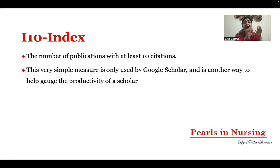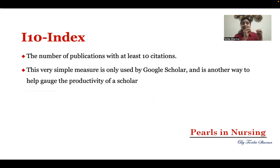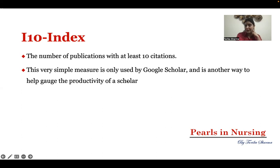The next metric is I-10 index, which is a somewhat higher threshold compared to H-index. It applies to researchers and counts the number of publications with at least 10 citations. If a researcher has one article with 10 citations, they get an I-10 index of 1; if they have 20 citations across qualifying articles, they get 2. It is a simple measure used by Google Scholar to help assess a scholar's productivity.